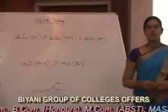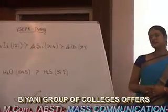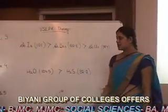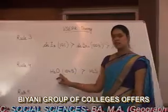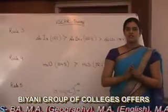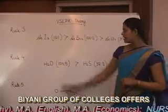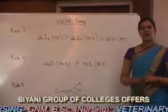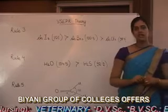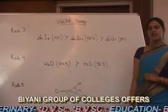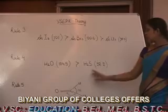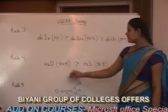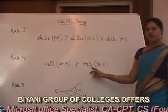Rule fourth: it states that repulsion between electron pairs in filled shells is more than the repulsion between electron pairs in incompletely filled shells. For example, in oxygen, the valence shell is the second shell, which has four orbitals and can accommodate eight electrons — hence it is completely filled. But in H₂S, the valence shell is the third shell, with 3S, 3P, and 3D orbitals that can accommodate 18 electrons but is filled by only 8 — hence it is incompletely filled. Therefore, the bond angle in H₂O is greater than the bond angle in H₂S.